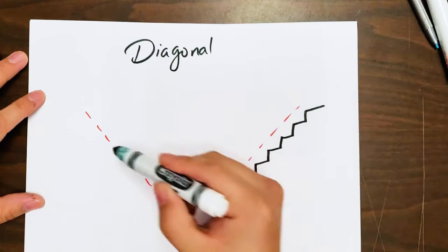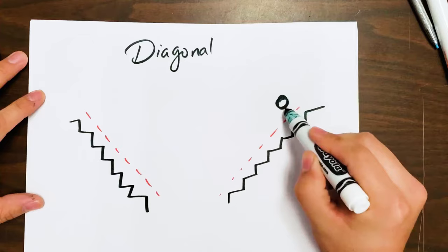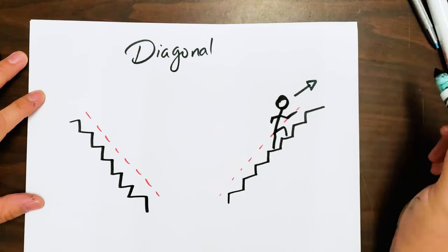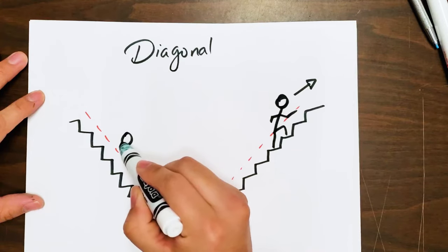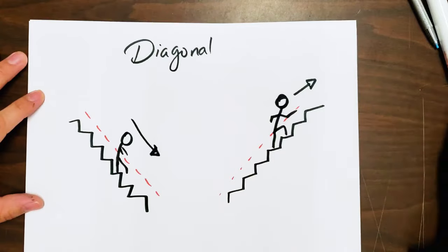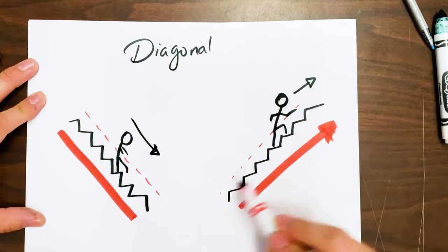Let's take this example. Whenever we draw people going up a flight of stairs, it represents accomplishments. Whenever we draw people going down a flight of stairs, it means something went horribly wrong. So the direction of the diagonal line will tell you a lot about your drawing. Is it accomplishing something, or did it fail at something.